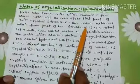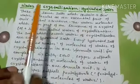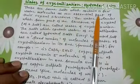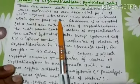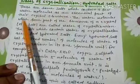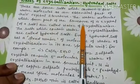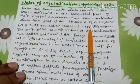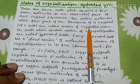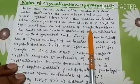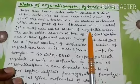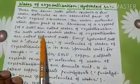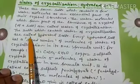Water of crystallization — there are some salts which contain a few water molecules as an essential part of their crystal structure. The water molecules which form part of the structure of a crystal of a salt are called water of crystallization. The salts which contain water of crystallization are called hydrated salts.